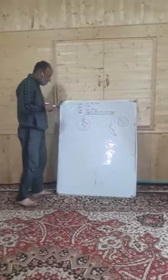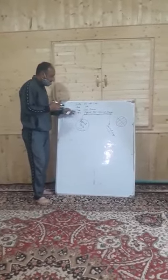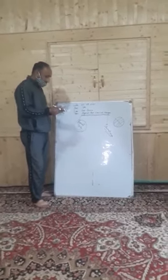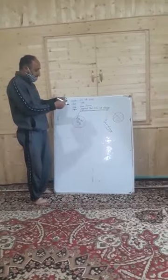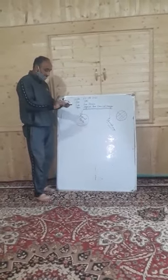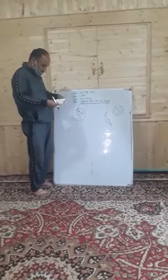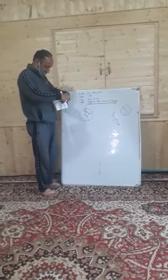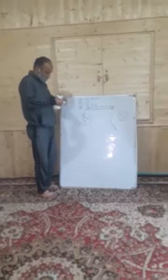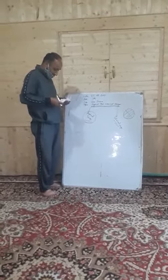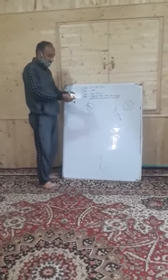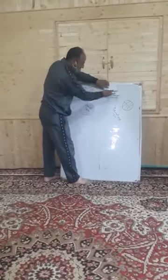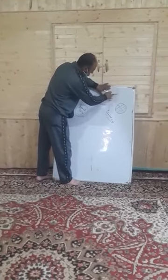Now we will learn about physical changes. Today we will learn some activities. For example, this paper is a rectangle — it is a rectangular shape. We will look at this paper. This is not a change, but the paper's shape is what will change. If you fold it or cut it, it will still be equal to the original sheet.